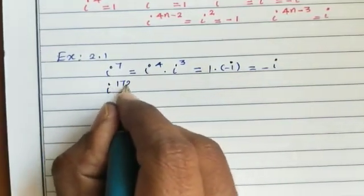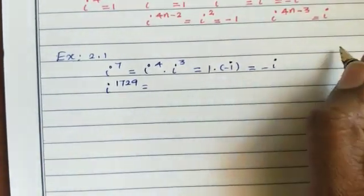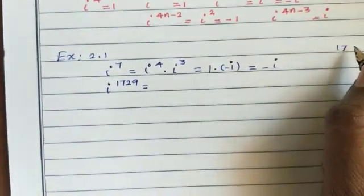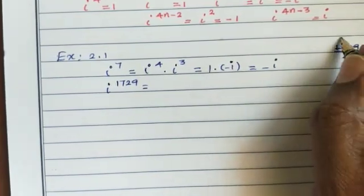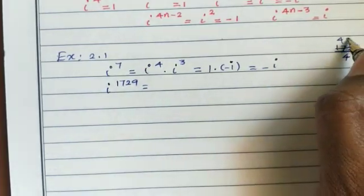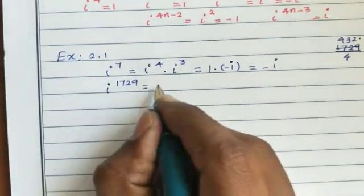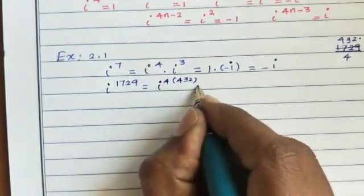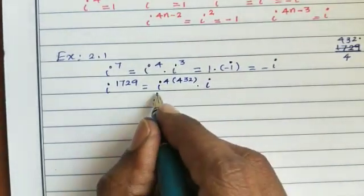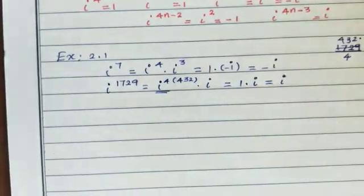Next, simplify i^1729. Divide 1729 by 4: 4 × 432 = 1728, balance 1. So i^1729 = i^(4×432) × i = 1 × i = i.